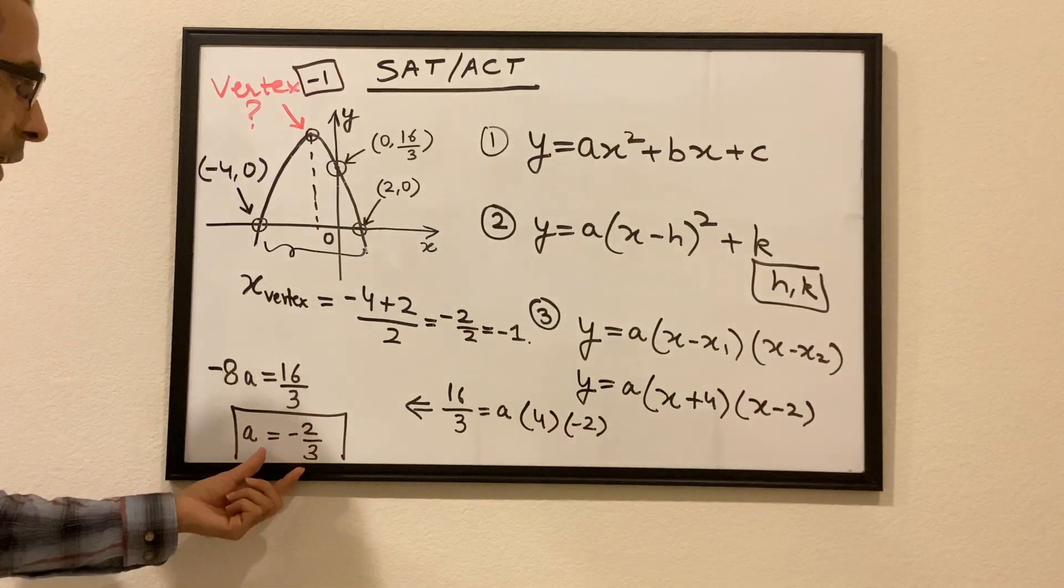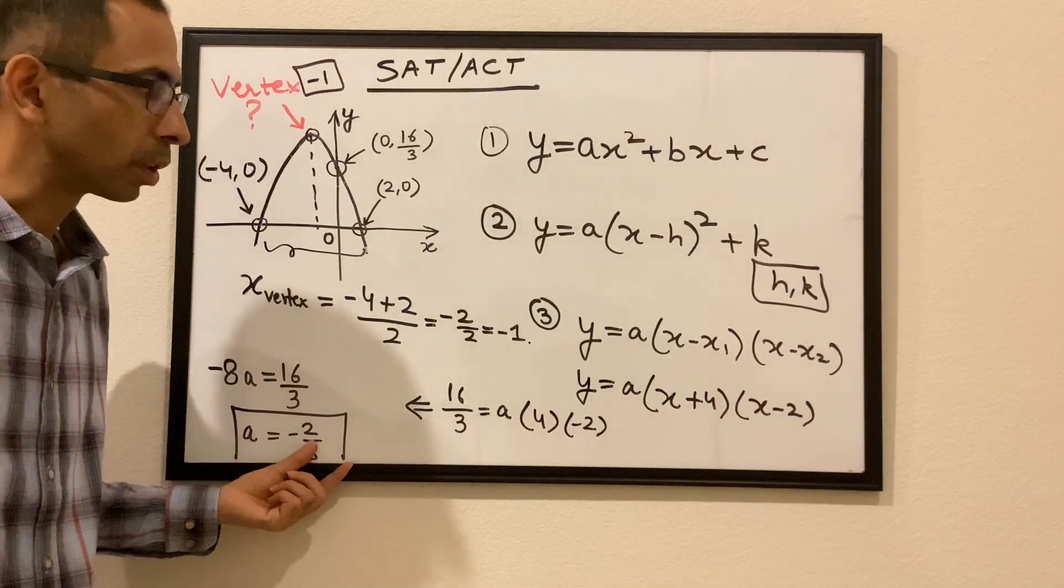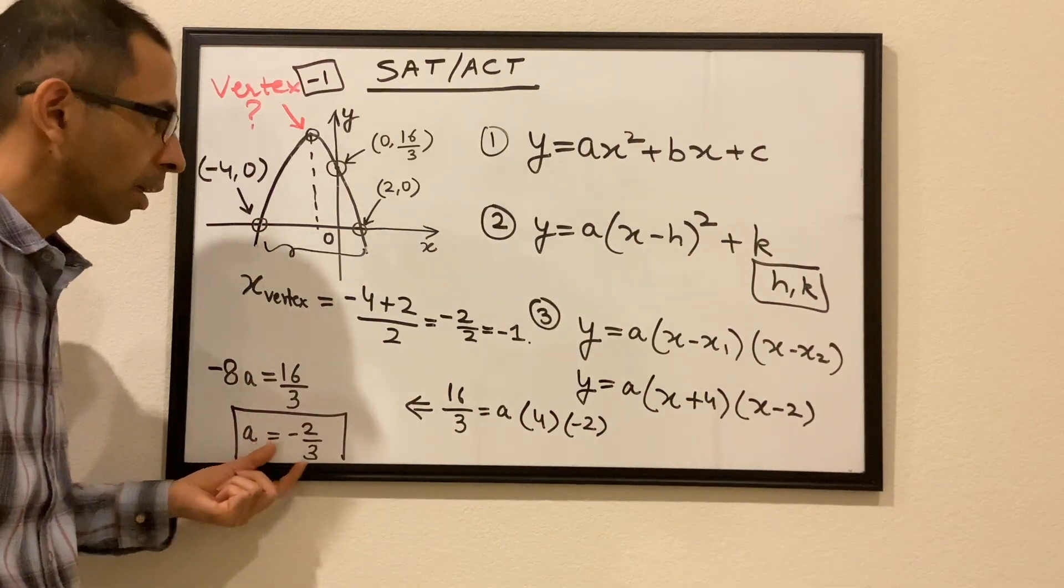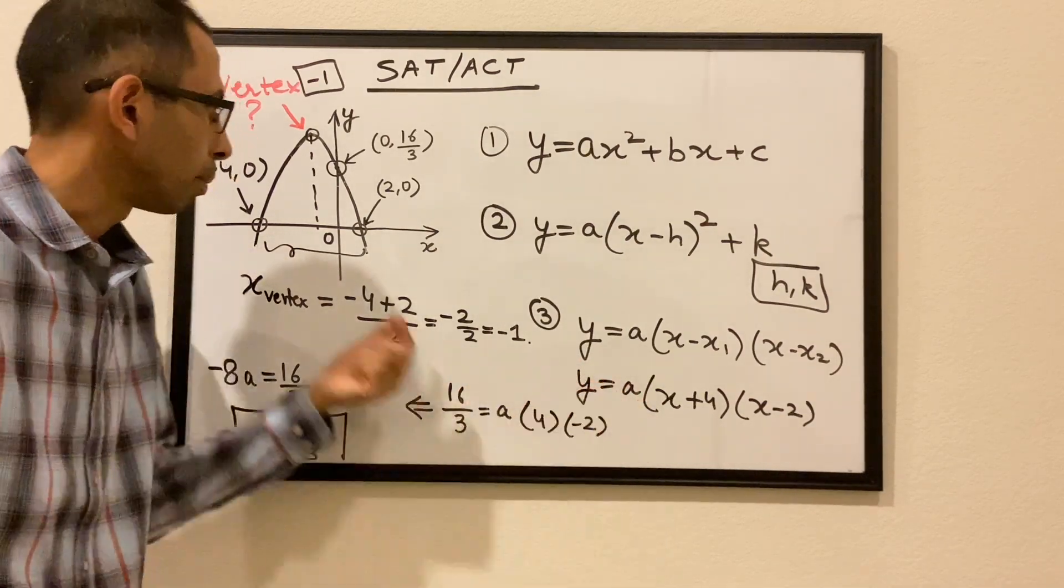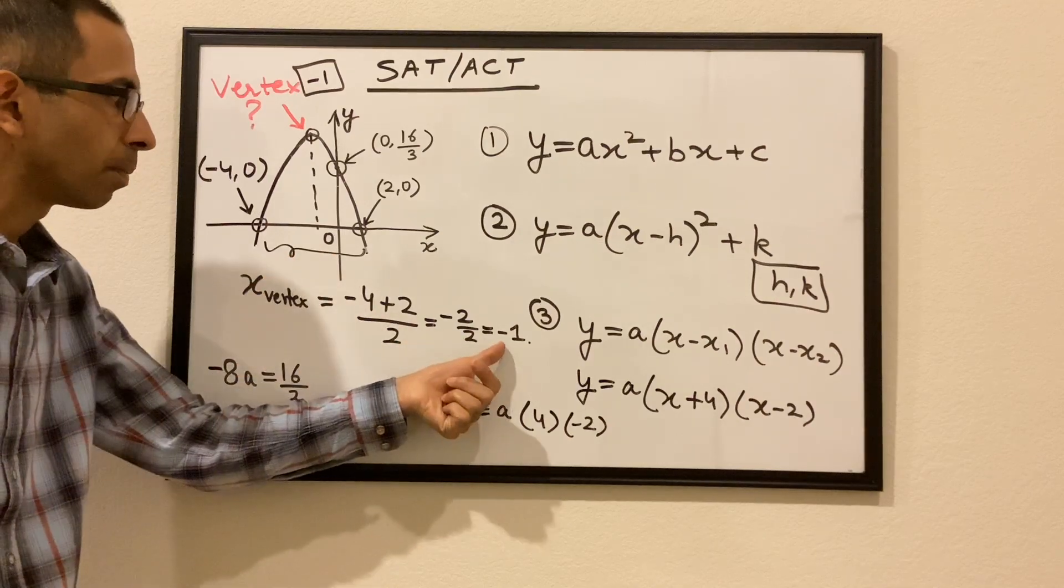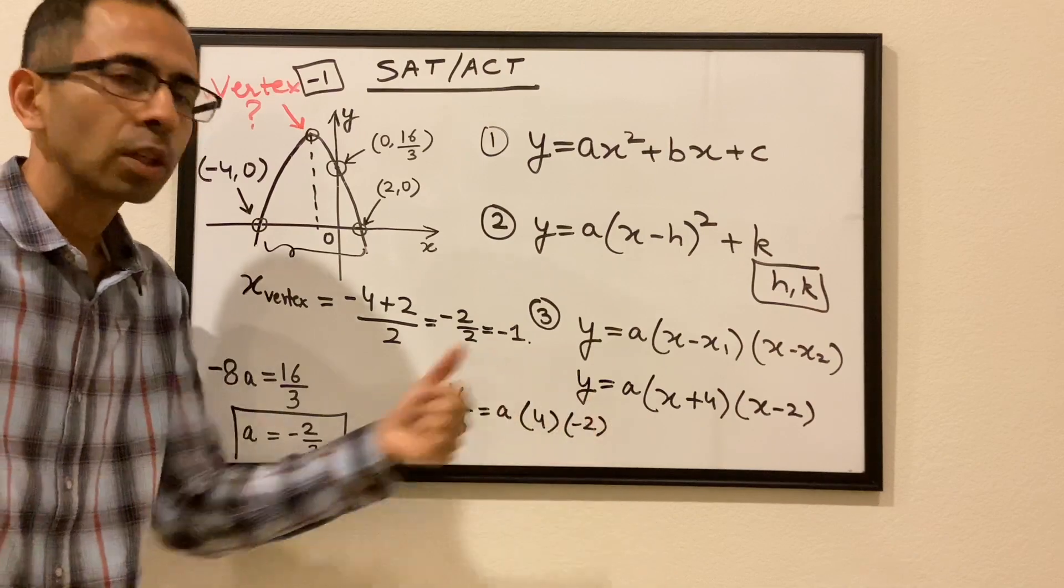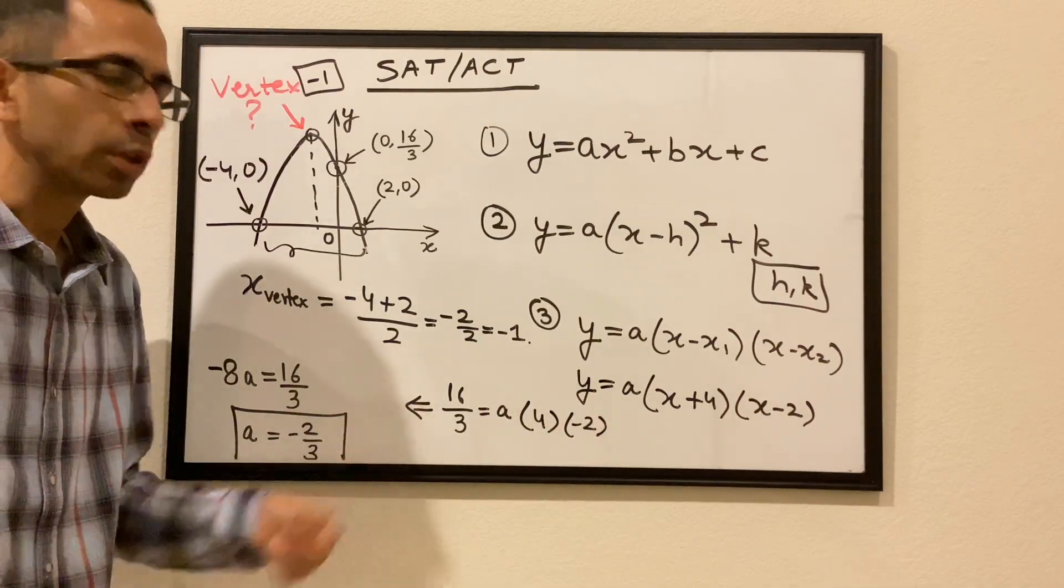So we got the value of a, which happens to be -2/3. Now, what we're going to do is we're going to plug this value of a over here and put the value of x as -1, which we found out earlier was the x-coordinate of the vertex, and get the corresponding value of y. Let's see what it comes out to be.